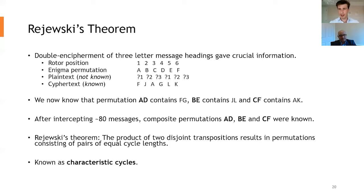Now what so happens, if you intercept enough messages, and it's about 80 for a given day, these composite permutations, A, D, B, E, and C, F were known. And Rejewski's theorem is this. The product of two disjoint transpositions results in permutations consisting of pairs of equal cycle lengths. Now don't worry too much exactly what it means. I'll go into an example of what exactly that means, and also Tim will show us the demonstration of the cyclometer as well. But what we need to know is that these are called characteristic cycles.